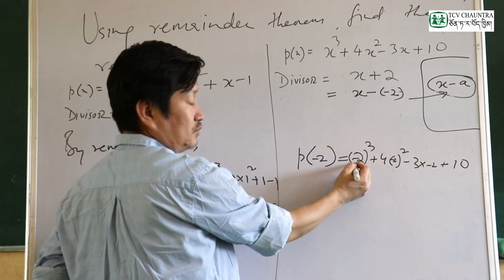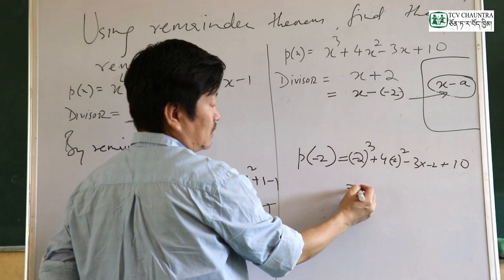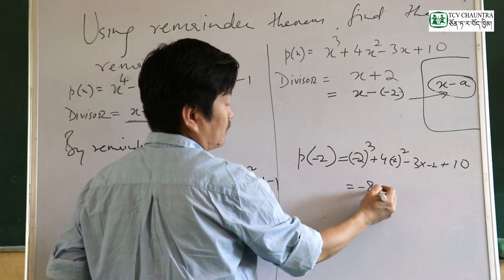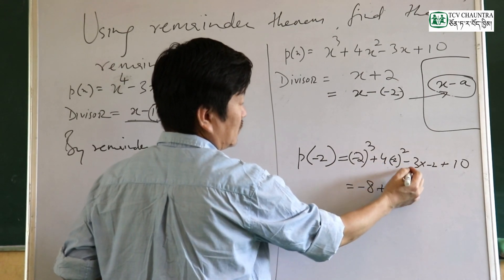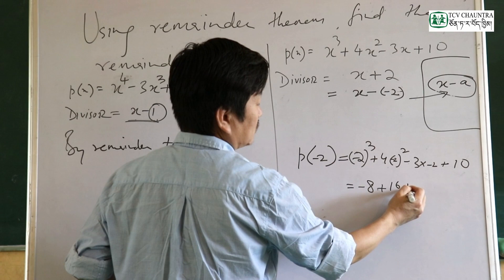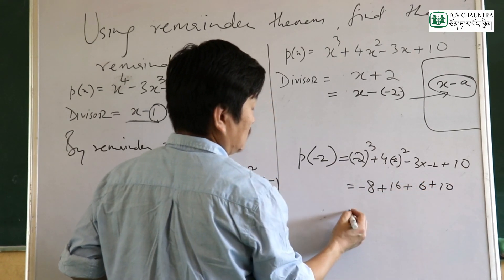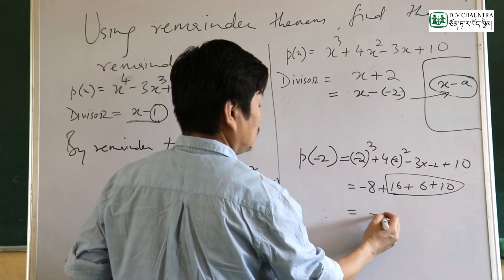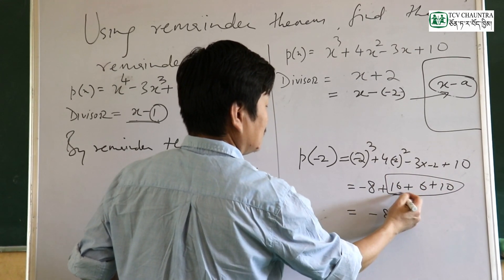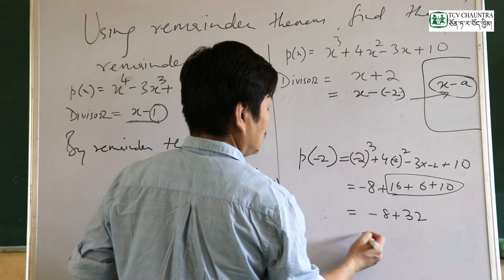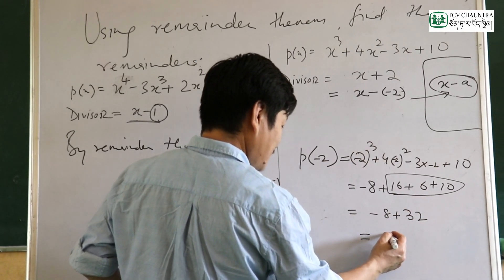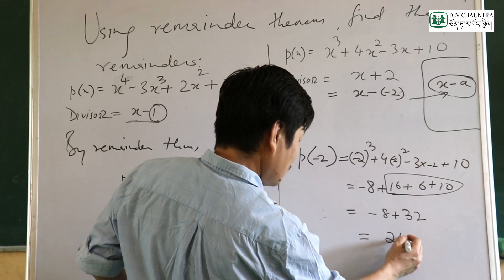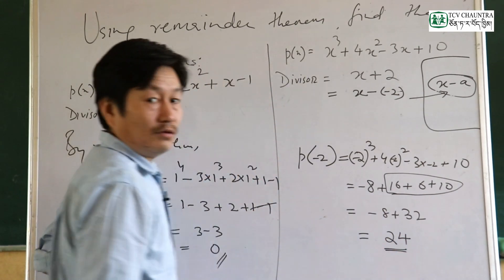Negative 2 times negative 2 times negative 2 equals negative 8. Then 4 into 4 equals 16, which is positive. So we have negative 8 plus 16 minus 6 plus 10. This gives remainder equal to 0.